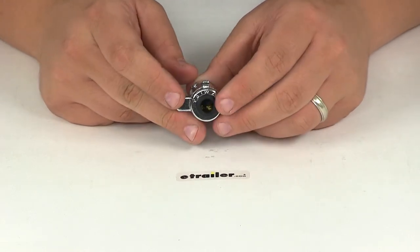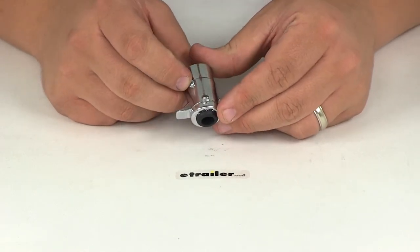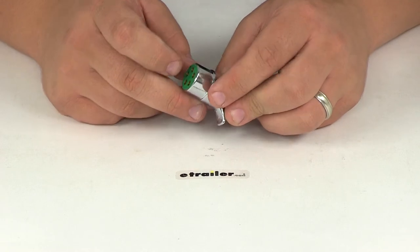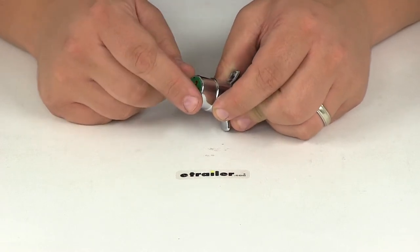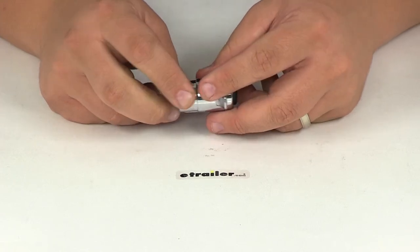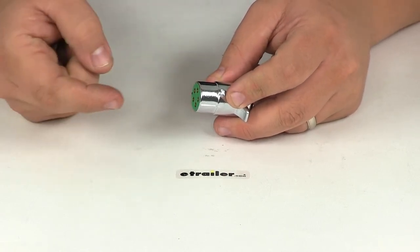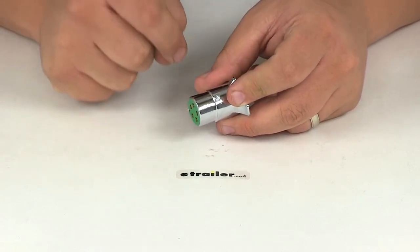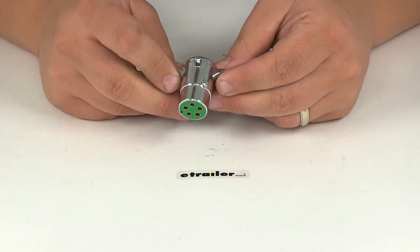To gain access to the wiring, undo the set screw. The set screw allows this portion to come out of the housing. Then run your wires through the grommet on the back, connect the wires to the back of the housing, reinsert it, and tighten back down the set screw.